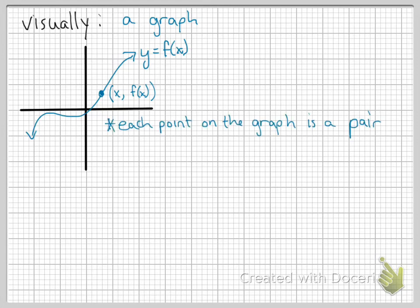So every point on the graph is a pair of values, x, y, that represent the input and the output for that particular input. x and f of x, 7 and f of 7, or 12 and f of 12, 0, f of 0.